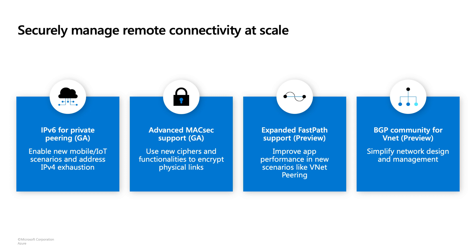Last but not least, we are very happy to announce support for BGP community on VNet. So now if you have a hub-and-spoke design topology, you can tag your hub VNet and your spoke VNets with different BGP community strings. When you receive these routes in your on-premises network, you can apply different routing policies and even security policies to those routes. We hope this feature will help simplify your network design and management.